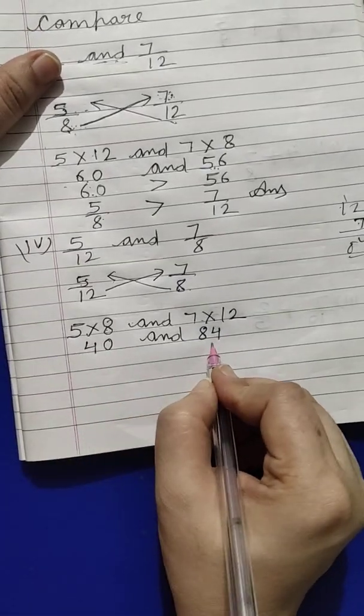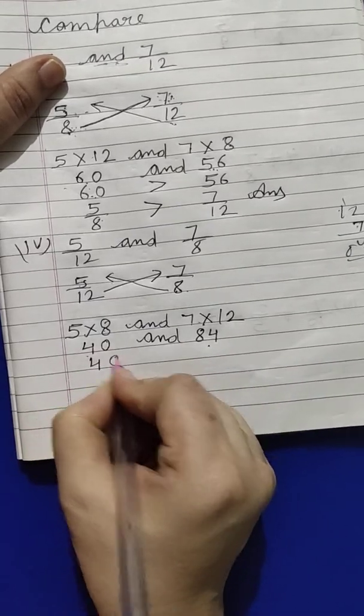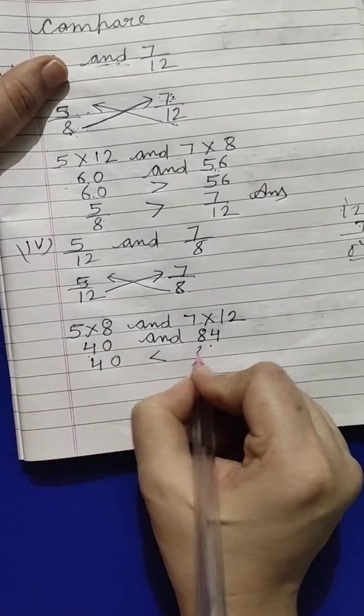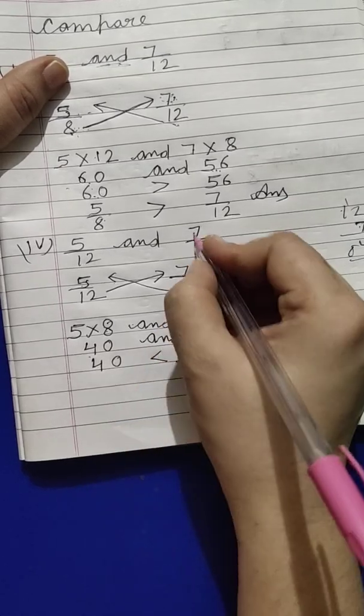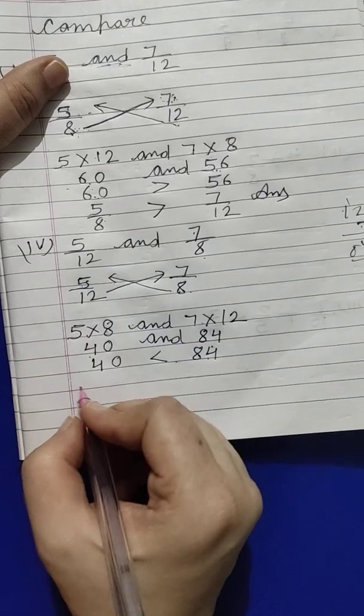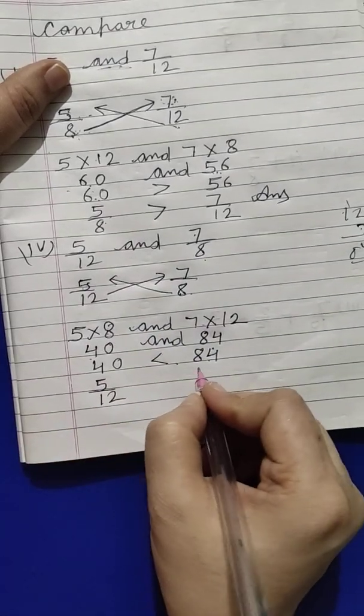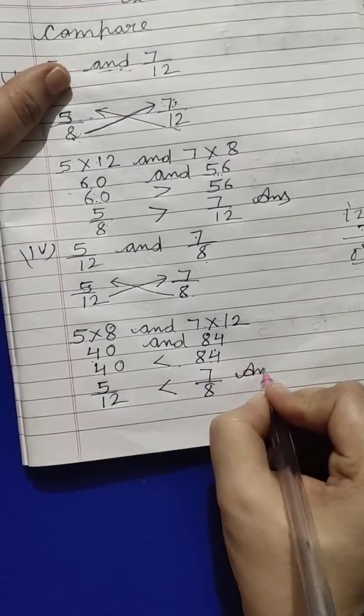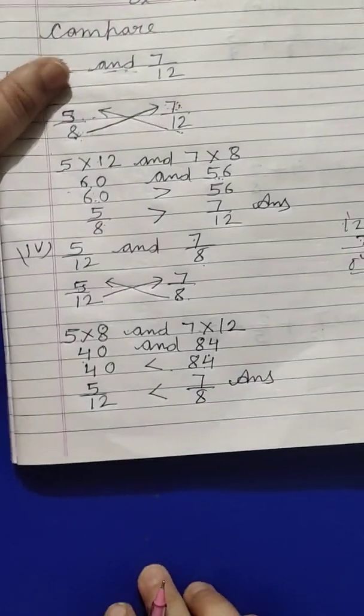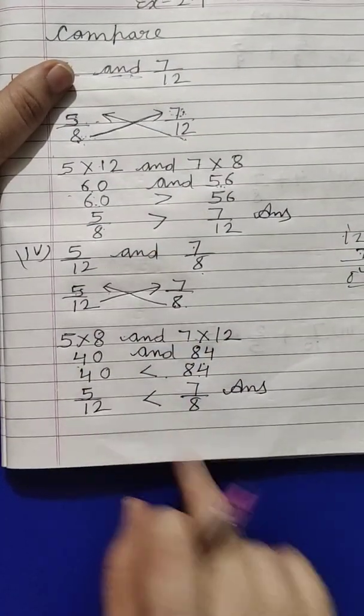Which one is bigger? 84? 84. Very good. So 84 is bigger. Now, which one is 84? 7 by 8. As it is, 5 upon 12 and 7 upon 8. This is our homework. So our compare questions, first we have two questions. Okay?